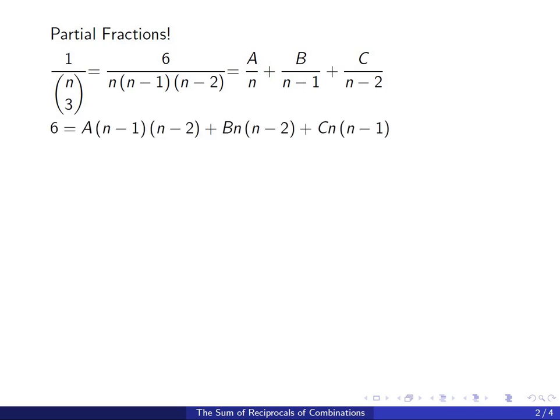So let's clear the denominators. If you do that, you get 6 on the left and on the right you get a times n minus 1 times n minus 2 plus b times n times n minus 2 plus c times n times n minus 1. In order to find a, b, c, there are different ways of doing that. You could set the coefficients of the two sides equal and then solve systems of equations. But an easier way would be to plug in different values of n that kill certain terms and that makes things easier.